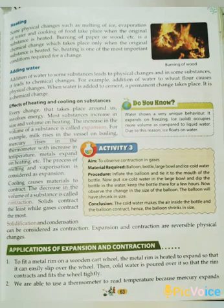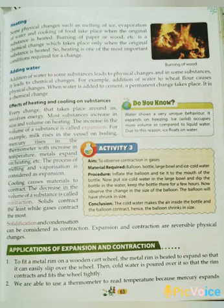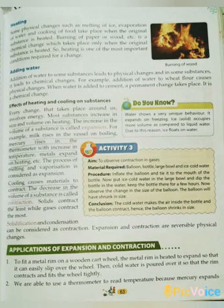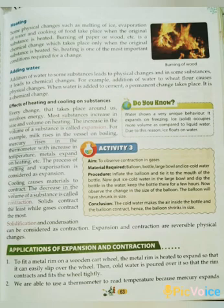Effects of heating and cooling on substances. Every change that takes place around us involves energy. Most substances increase in size and volume on heating. The increase in the volume of a substance is called expansion. For example, milk rises in the vessel on boiling, mercury rises in the thermometer with increase in temperature, and metals expand on heating. The process of melting and vaporization is considered as expansion.